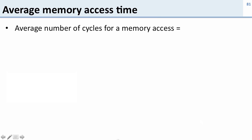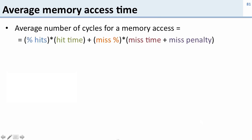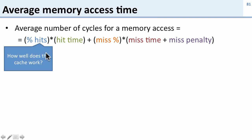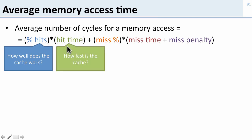Now let's talk about something called average memory access time, or AMAT — the average number of cycles per memory access. We compute it using this formula. We take the percentage of hits, which tells us how well the cache is working, times the hit time, which tells us how fast the cache is. If the cache takes one cycle, this term is just one cycle. This gives us the part of performance due to cache hits.